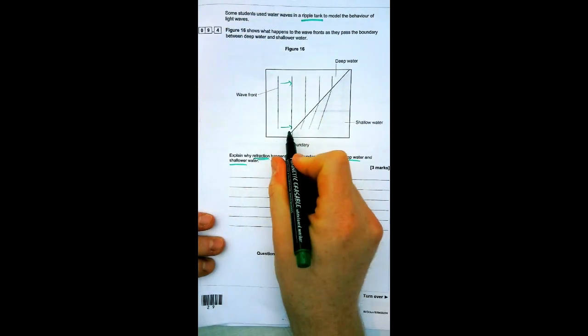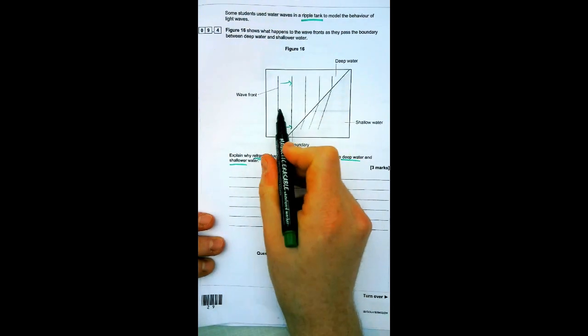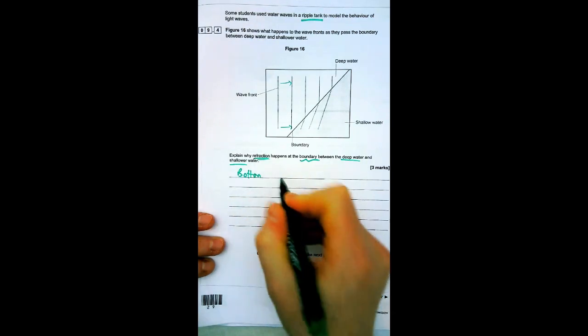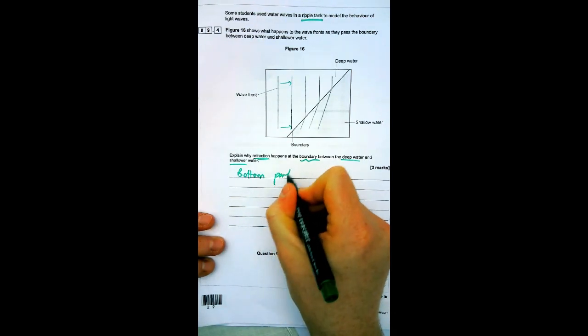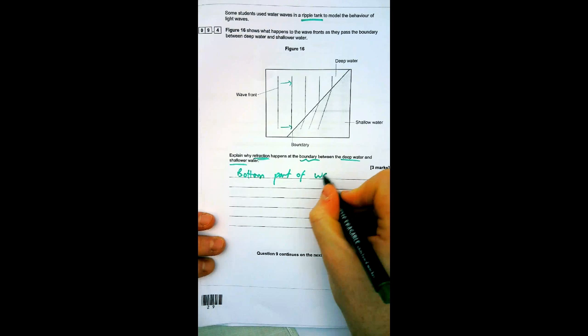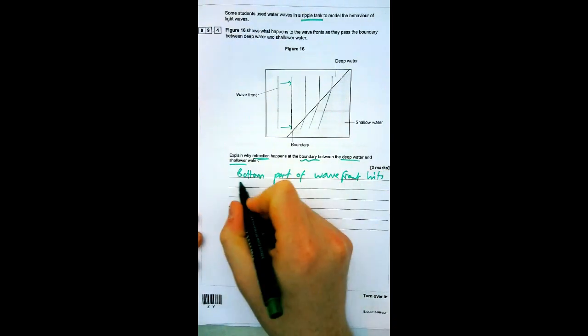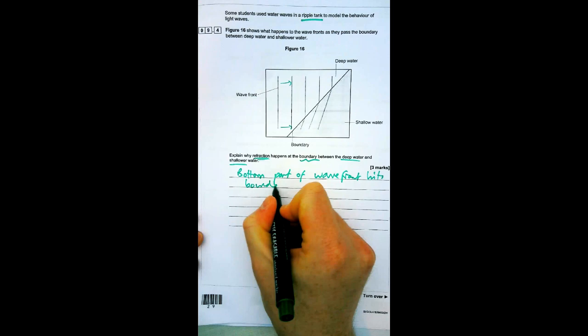Our first point is that the side that hits first is essentially the bottom part of the wave. The bottom part of the wave front reaches the boundary first.